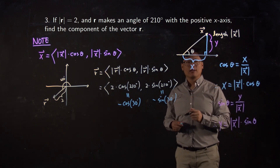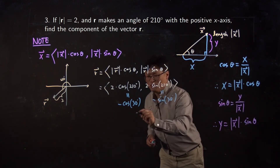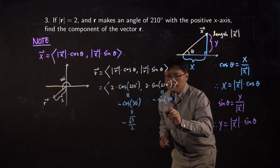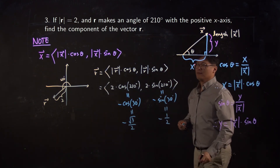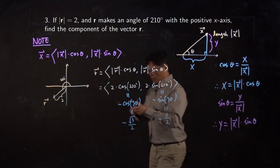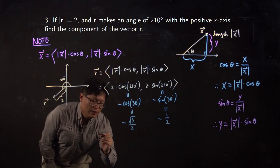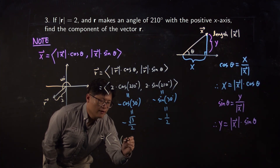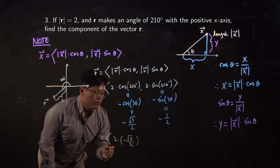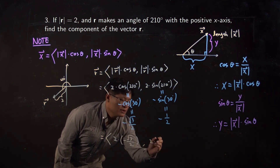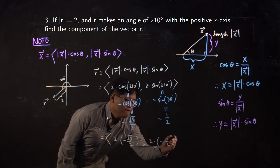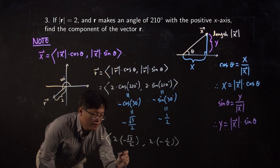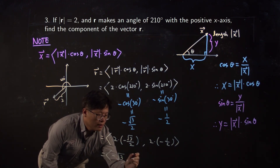You should remember cosine 30° and sine 30°. Cosine 30° is √3/2, so cosine 210° is −√3/2, and sine 30° is 1/2, so sine 210° is −1/2. So your vector r in component form is (2 · (−√3/2), 2 · (−1/2)).